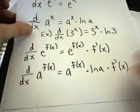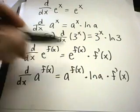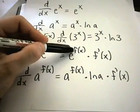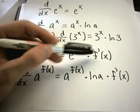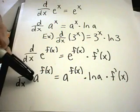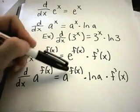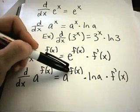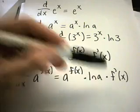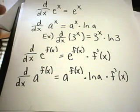More generally, if you take the derivative of e raised to something more complicated, you get e to that complicated stuff times the derivative of that complicated stuff. Likewise, if you have a raised to some complicated stuff, you get a to that stuff times ln of a, but you also have to multiply by the derivative of that stuff.